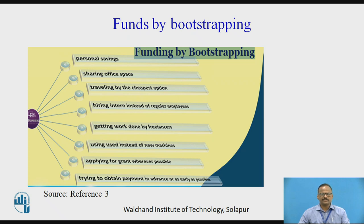For example, DSIR gives grants in two phases. In the first phase, they give 20 lakhs and you need not return the money. In the second phase, you can get 50 lakhs, and on that 50 lakhs there will be no interest. Also, try to obtain payment in advance from customers.